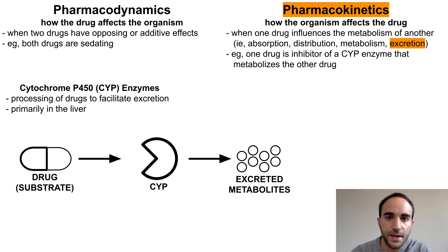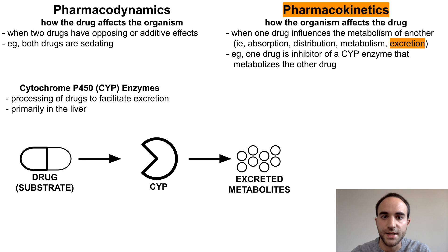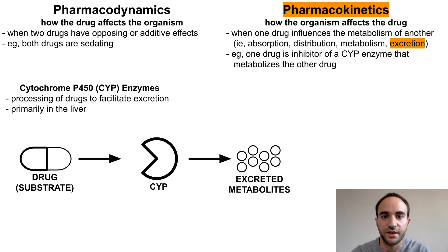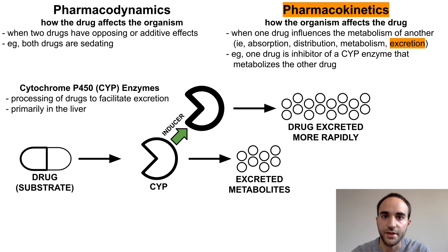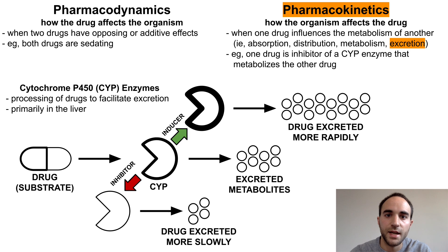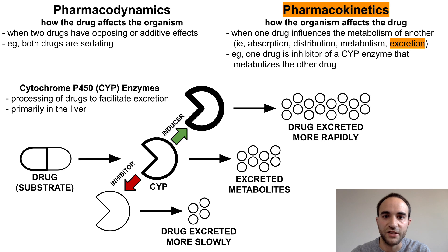An important concept here is that the more efficiently a CYP enzyme metabolizes a drug, the more quickly it is excreted from the body, and the less of an effect it has on the body. Therefore, drug-drug interactions can occur when drugs affect the efficiency of CYP enzymes, acting as either inhibitors or inducers. A CYP inducer increases the efficiency of a CYP enzyme, thereby causing drugs to be excreted more rapidly and to have less of an effect on the body. A CYP inhibitor decreases the efficiency of a CYP enzyme, thereby causing drugs to be excreted more slowly and to have more of an effect on the body.